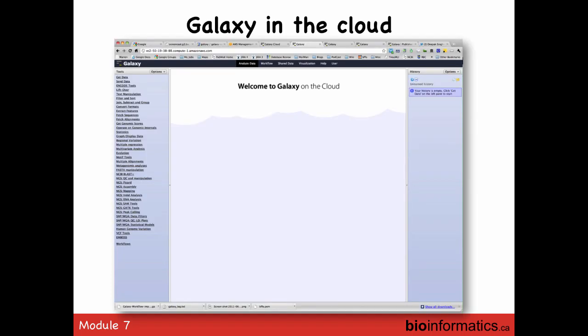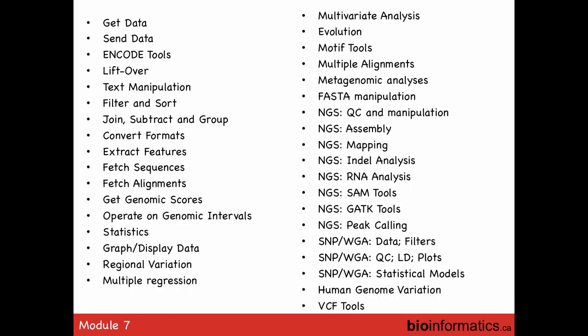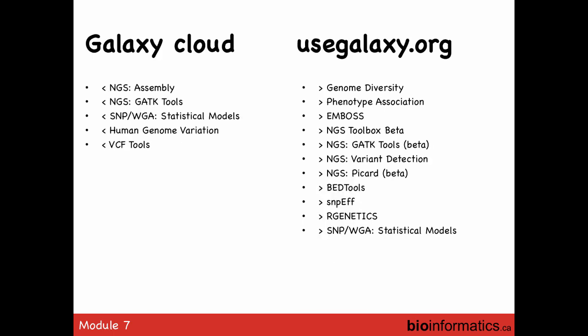Galaxy in the cloud looks exactly the same as any other Galaxy instance — the difference is which tools are present on the server. Some tools are in both the public server and the cloud version, some only in one or the other. The cloud version seems to be a bit behind on having the same up-to-date tools as usegalaxy.org.